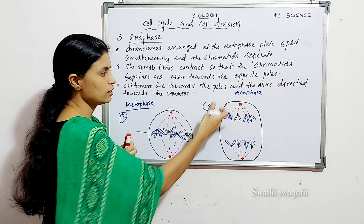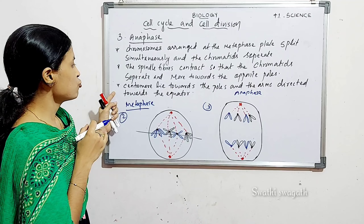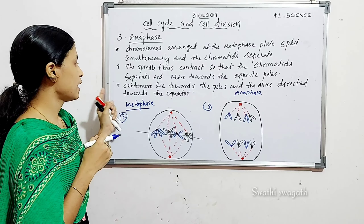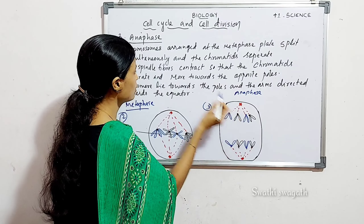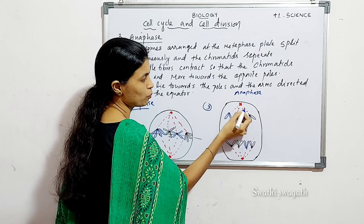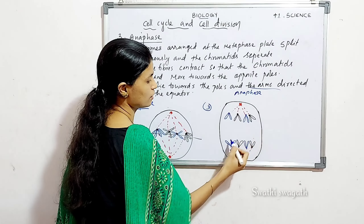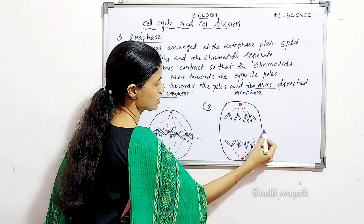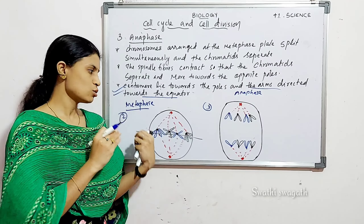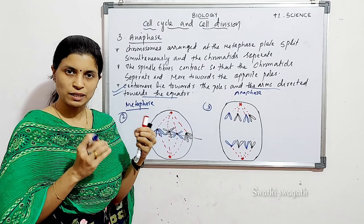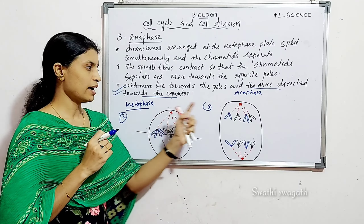The separated chromatids move towards the opposite poles. The centromere part faces the poles while the arms are directed towards the equator — so in the diagram, the centromere leads and the arms trail behind facing the center. The chromosome splits at the centromere region and moves to opposite poles as the spindle fibers contract. These are the changes in anaphase.